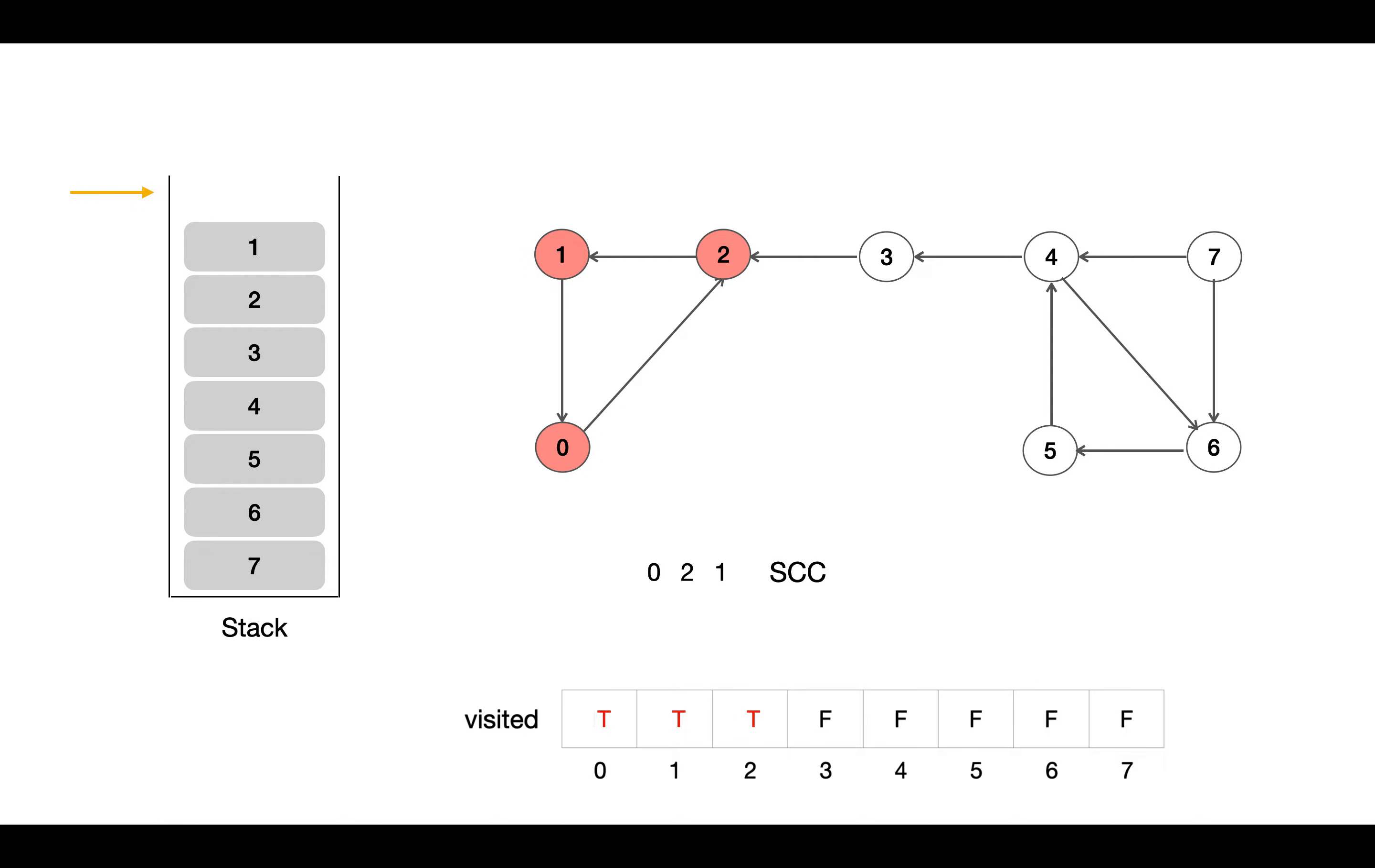Even after reversing the graph we got a cycle, so this component is a strongly connected component. Moving forward, we still have nodes in the stack, so we repeat the process and keep popping the node until we get any unvisited node. On top there is 1, we check it's already visited so we pop the node. Then 2, 2 is also visited. Now we come to vertex 3. From 3 there is just a single outgoing edge which is already visited, hence 3 is the single vertex SCC.